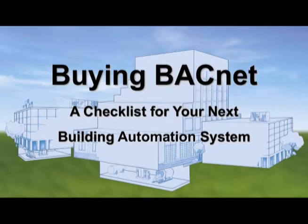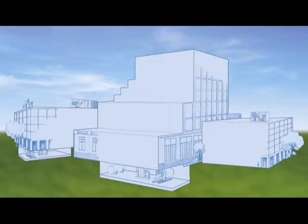Are you looking for better control of the heating, cooling, ventilation, and lighting in your building? To decrease energy costs while maintaining optimal occupant comfort, you need a building automation system, or BAS for short.